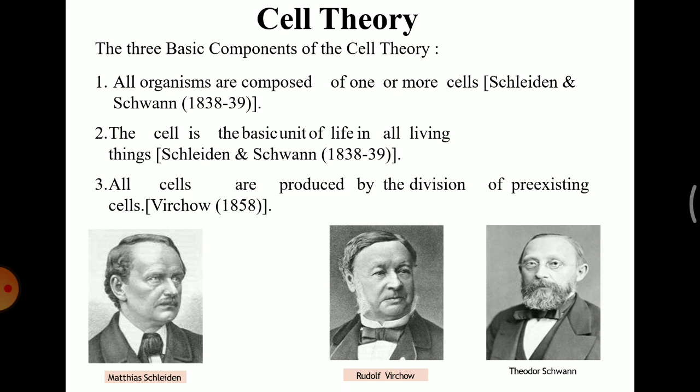Third, all cells are produced by the division of pre-existing cells. All new cells that form are made through division of old cells. The old cell divides and new cells are produced. And their chemical composition and metabolism of cells are the same.